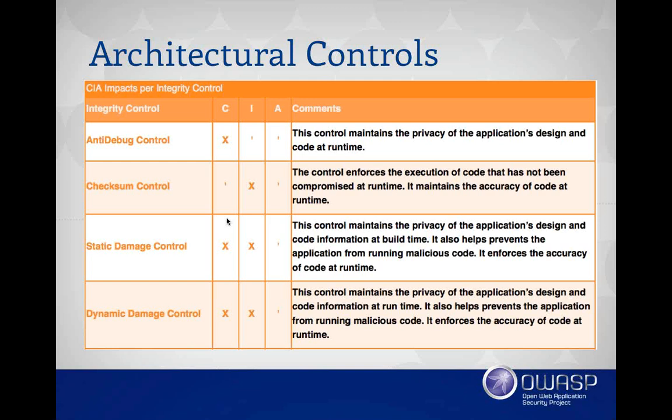Dynamic damage control is an interesting one — this is actually directly connected to the Target incident. In the Target incident involving credit card theft, there was memory scraping going on. The malware was scraping memory that had unencrypted content in it. With the dynamic damage control, the idea is that code or data is damaged while it's on disk and when it's brought into memory and repaired back to its original state before execution, you can execute that code. But then afterwards, you immediately re-damage that particular code or data while it's sitting in memory. In the case of that malware, had they been applying some form of dynamic damage control, they would have been able to stop the actual memory scraping from happening.